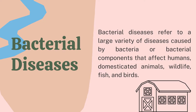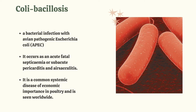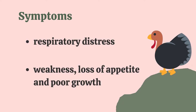The first bacterial disease we are going to discuss is colibacillosis, a bacterial infection with avian pathogenic Escherichia coli or APEC. It occurs as an acute fatal septicemia or a subacute pericarditis and air sacculitis. It is a common systemic disease of economic importance in poultry and is seen worldwide.